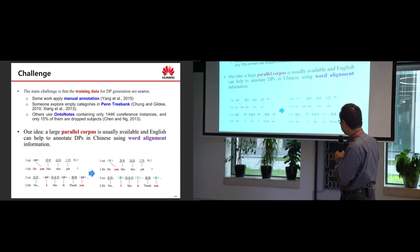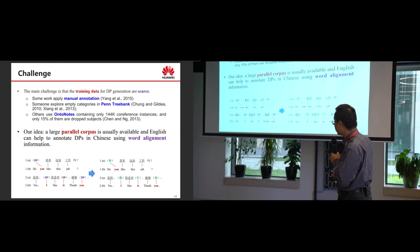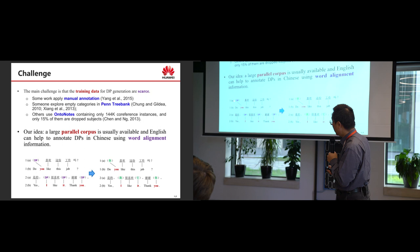We try to find the correct position in the Chinese sentence and guess there should be a pronoun there. We use this data to build a model to generate dropped pronouns on the Chinese side. For example, in Chinese we can say 'like it' but in English you say 'do you like it' — 'you' is dropped in Chinese. Using alignment, we find the English 'you' is not aligned to anything on the Chinese side, so we generate a pronoun there.